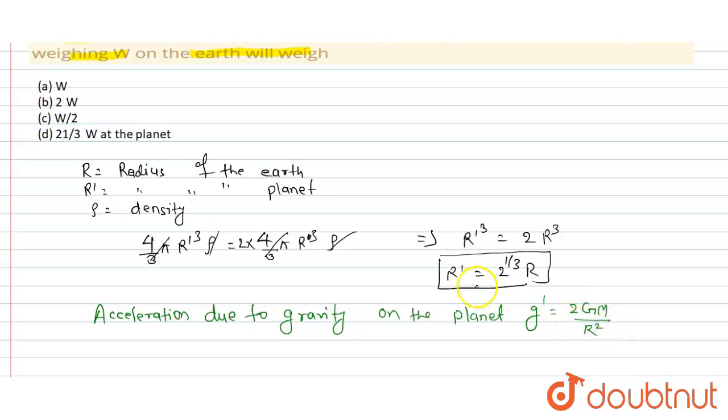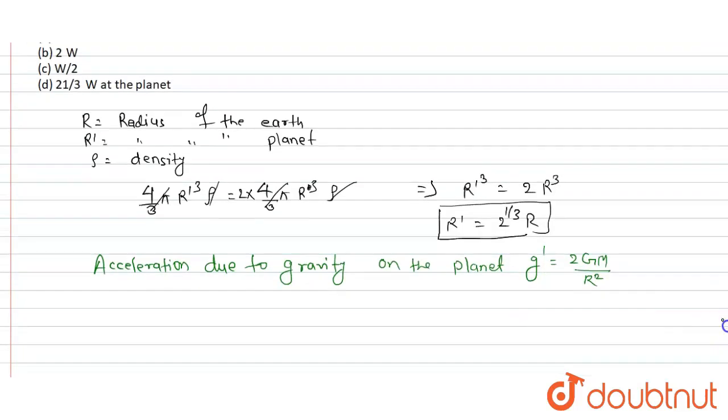So this is R', so this can be written as we put the value of R'. g' can be written as 2Gm and R' value is 2^(1/3) R, whole squared. And we get 2Gm divided by 2^(2/3) R².